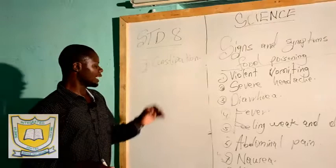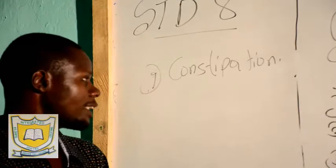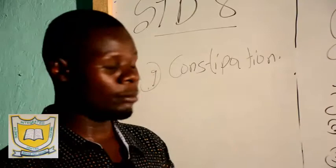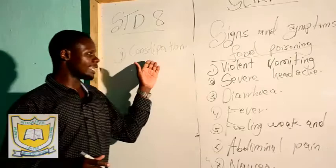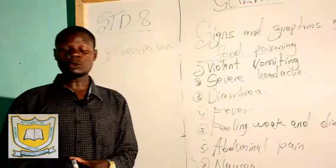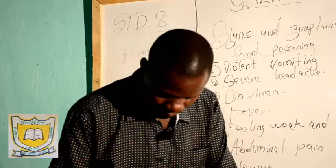And then lastly, we talk of constipation. When you don't consume a lot of roughage or fiber, you find that you don't empty your bowel. So it is another sign of food poisoning. These are the signs and symptoms of somebody who has consumed poisoned food.